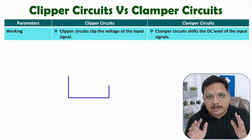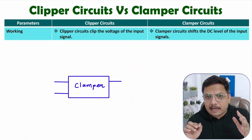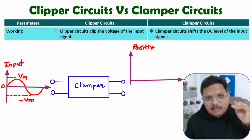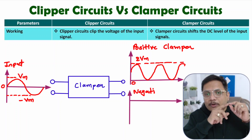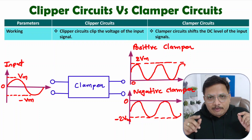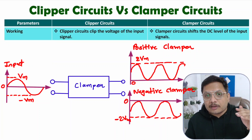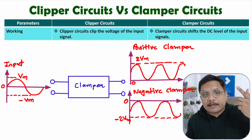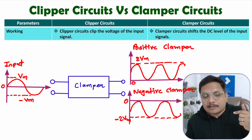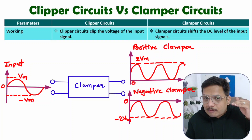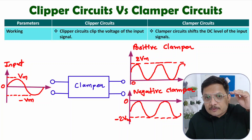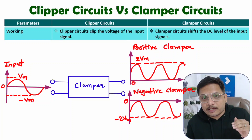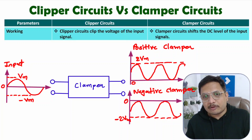When it comes to clamper circuit, you will be shifting the DC level of the given input signal. If you have a sinusoidal input signal and you increase the DC level by a positive DC voltage, then that will be a positive clamper. If you shift the DC level of the entire input signal by a negative voltage, then that will be a negative clamper.